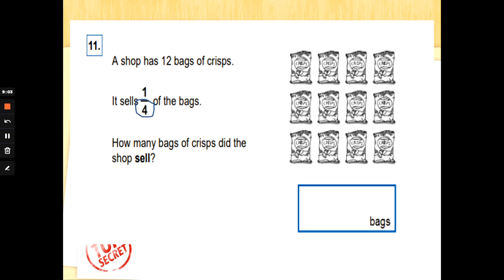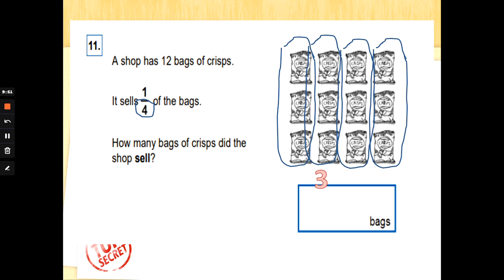Number eleven. A shop has twelve bags of crisps. It sells one quarter of the bags. How many bags of crisps did the shop sell? A fraction sign can mean the divide sign. If we wanted to work out a quarter of twelve, we need to work out twelve divided by four. We need to use grouping to help us divide here. We need to divide into four equal groups. I can get one group, two groups, three groups, four equal groups. How many bags are in one group to find one quarter of the crisps? One, two, three. That's right. Twelve divided by four, or twelve grouped into groups of four, or one quarter of twelve is three.